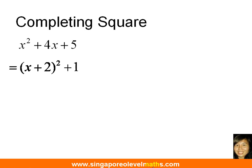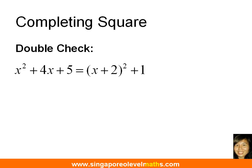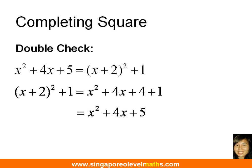We just need to simplify, and this is what we have. Now the beauty about completing the square is that after you are done with the steps, you can do a double check. Expand (x + 2)² + 1 and see if you return to the original quadratic equation. In this case, yes we do, which means your completing the square is correct.